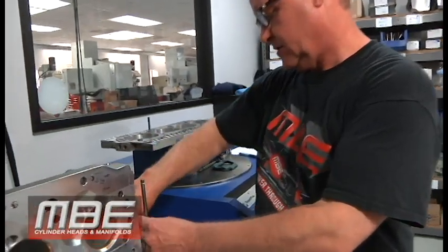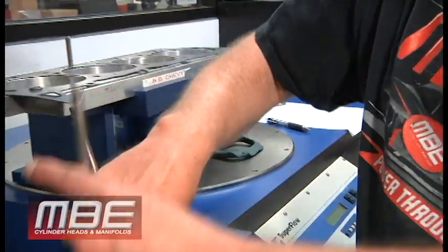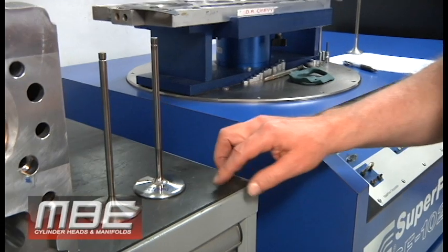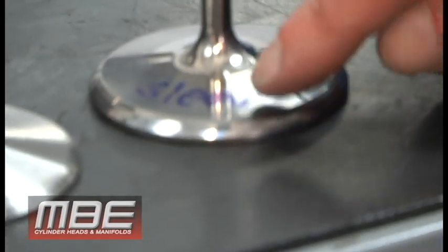Today I want to go over back angles on intake valves and why they are so important. You can see here we have two valves—they look identical, same outside diameter and everything. But now look at the top here. This is the MBE valve with our two angles and the length of those angles.